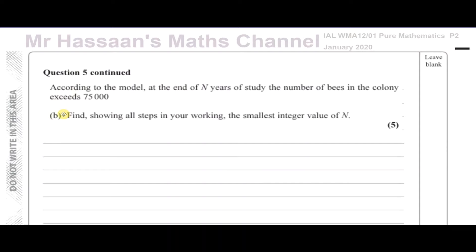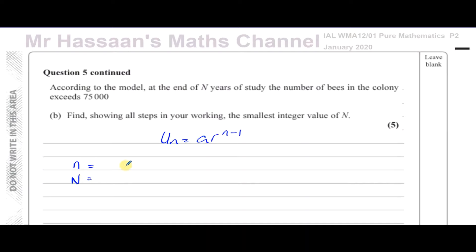Now for question 5 part b. According to the model, at the end of n years of study, the number of bees in the colony exceeds 75,000. Find, showing all steps in your working, the smallest integer value of n. This is very tricky because they use n here — don't confuse this with the n in our formula u_n equals a times r to the power of n minus 1. Let's call the formula's n 'little n' and the years after the study 'big N'.